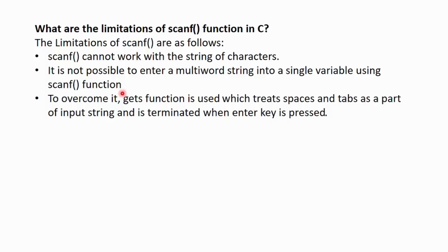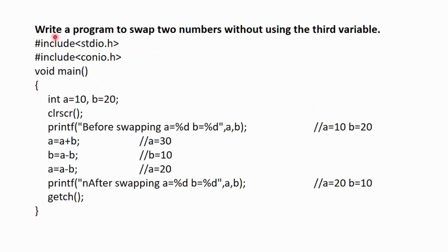So, to counter this problem, the getf function is used which treats the spaces and tabs as a part of the input string. And it is terminated only when the enter key is pressed. Next question, write a program to swap two numbers without using the third variable. Here we have declared two integer type variables a and b. a is initially holding the value of 10 while b is holding the value of 20. After swapping, we need a to hold the value 20 and b to hold the value 10.